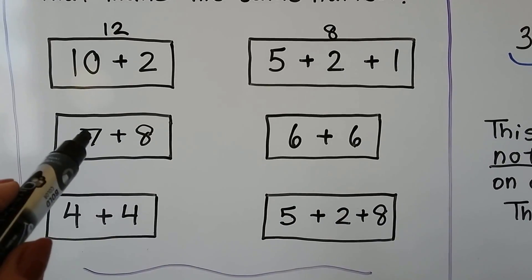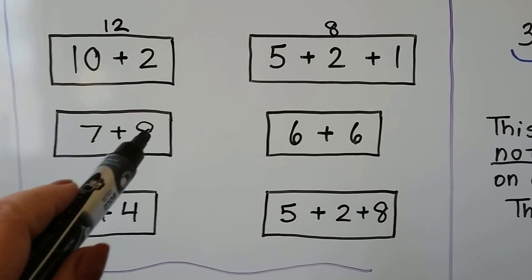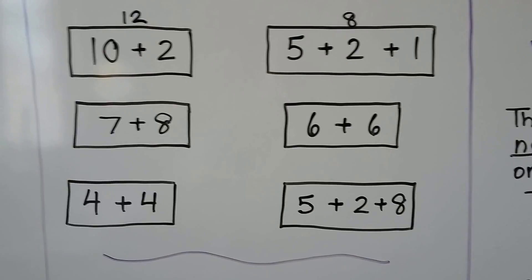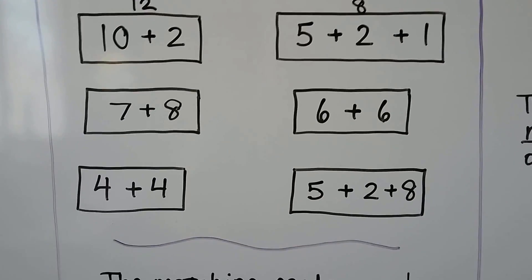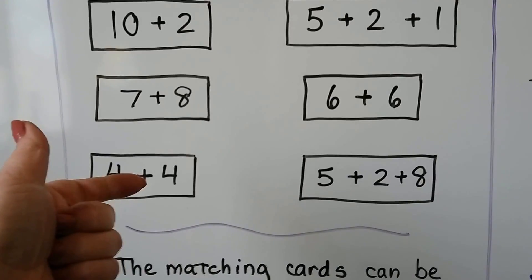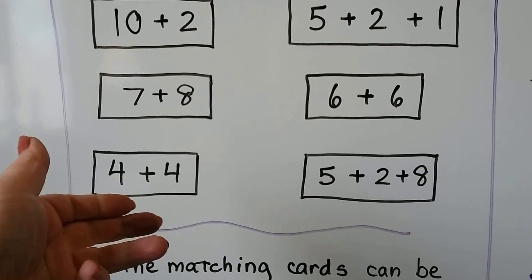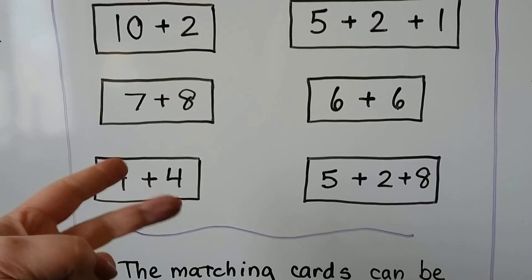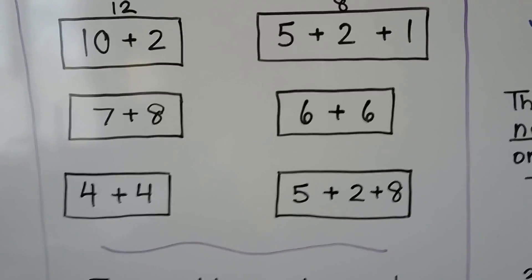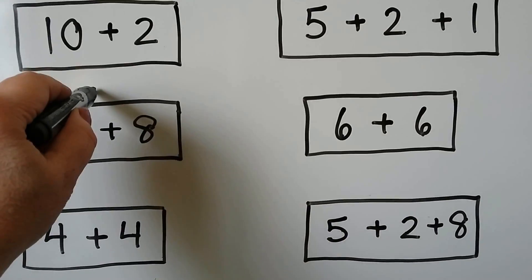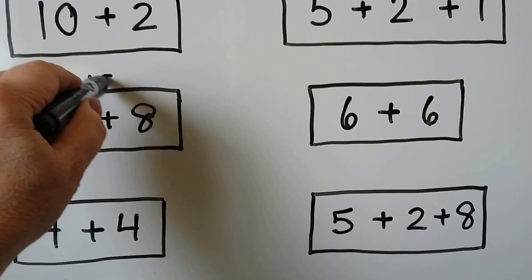Here we have 7 plus 8. We start with the 8 and count on 7: 8, 9, 10, 11, 12, 13, 14, 15. So 7 plus 8 is equal to 15.